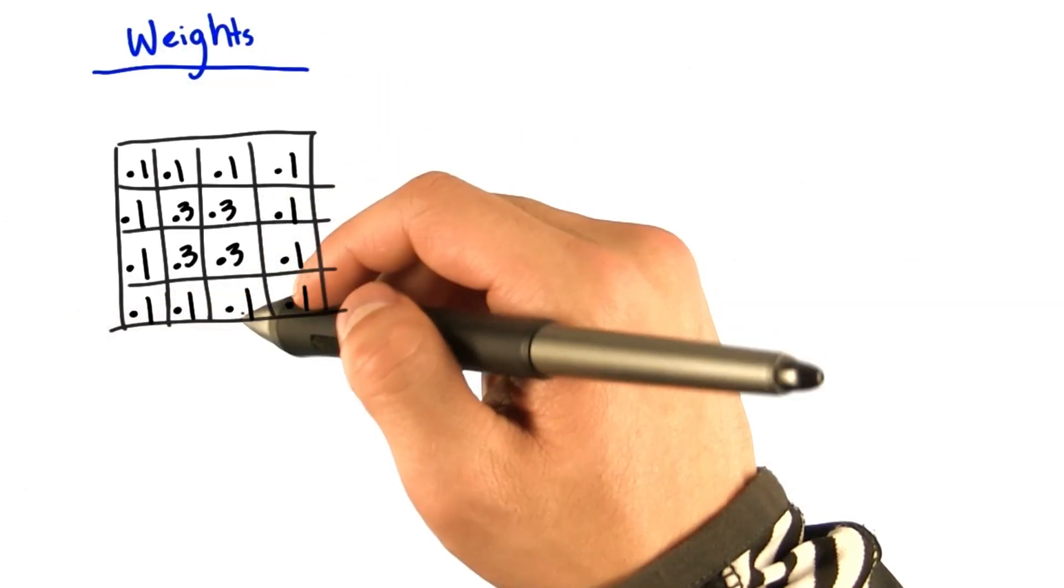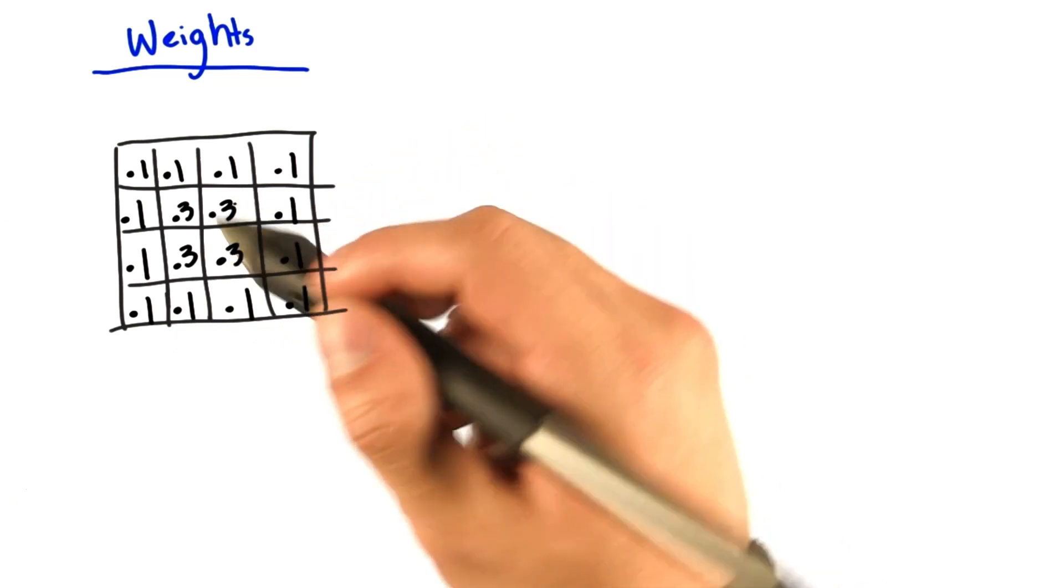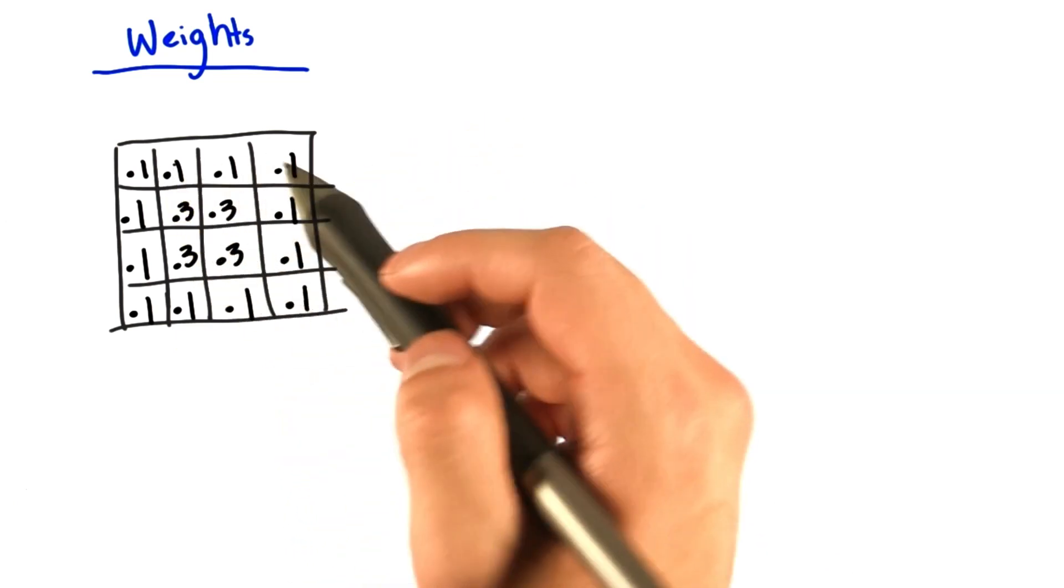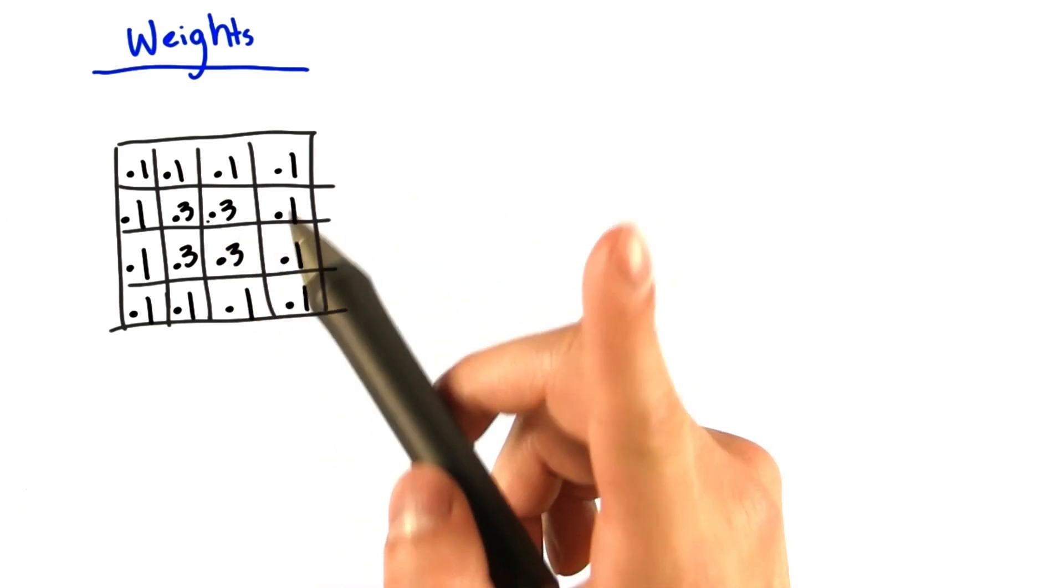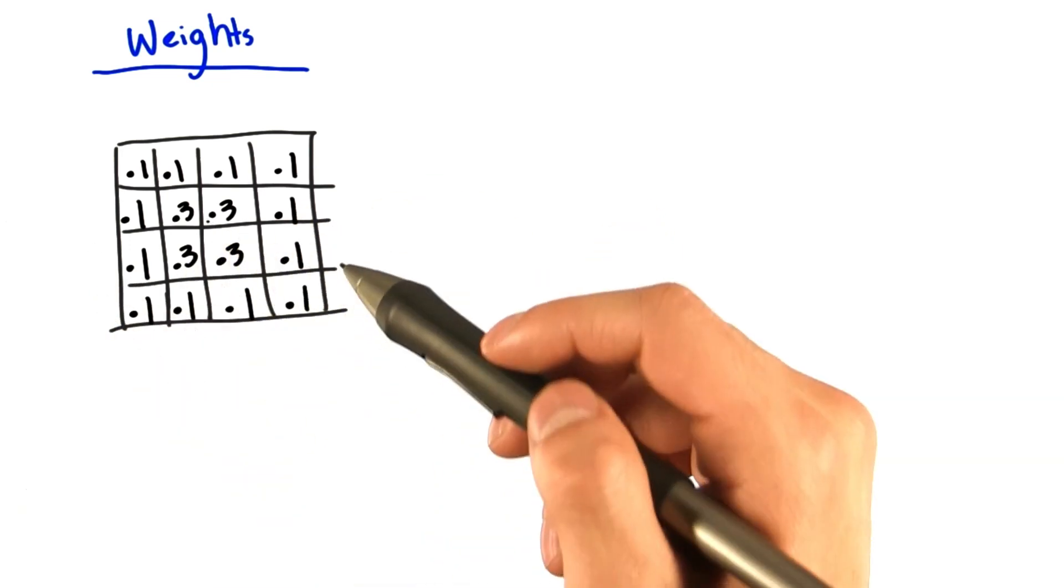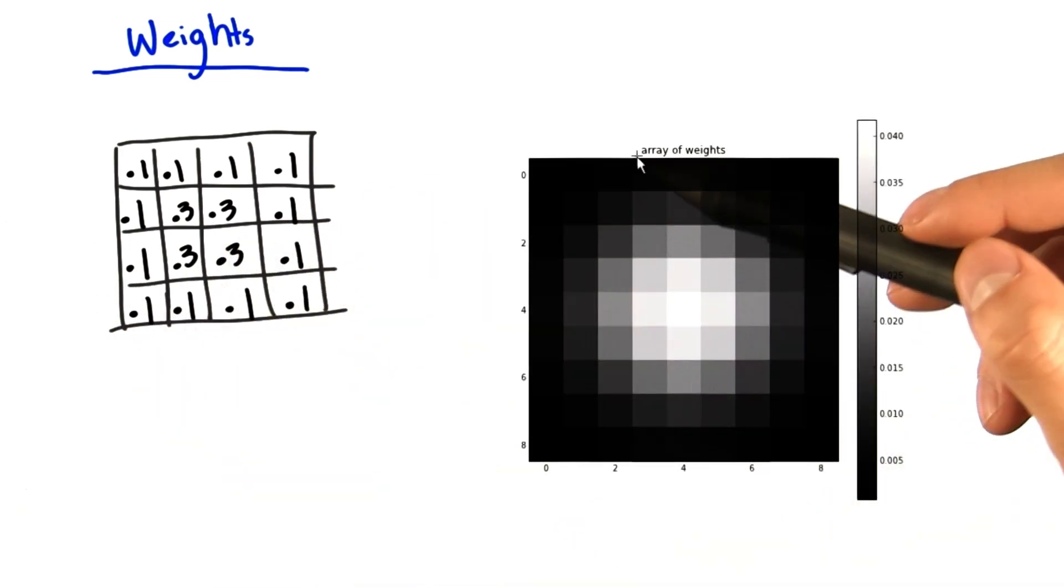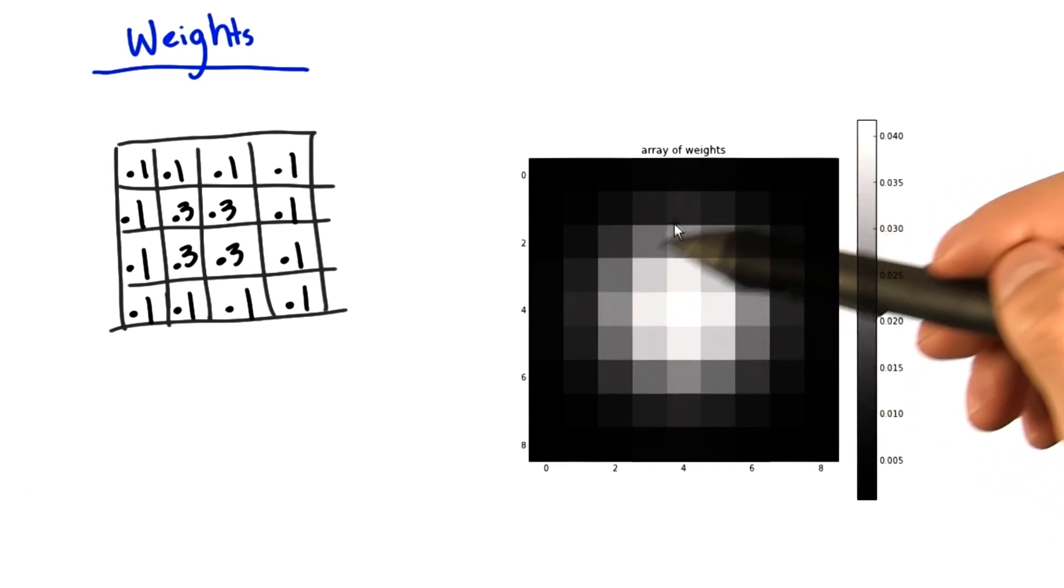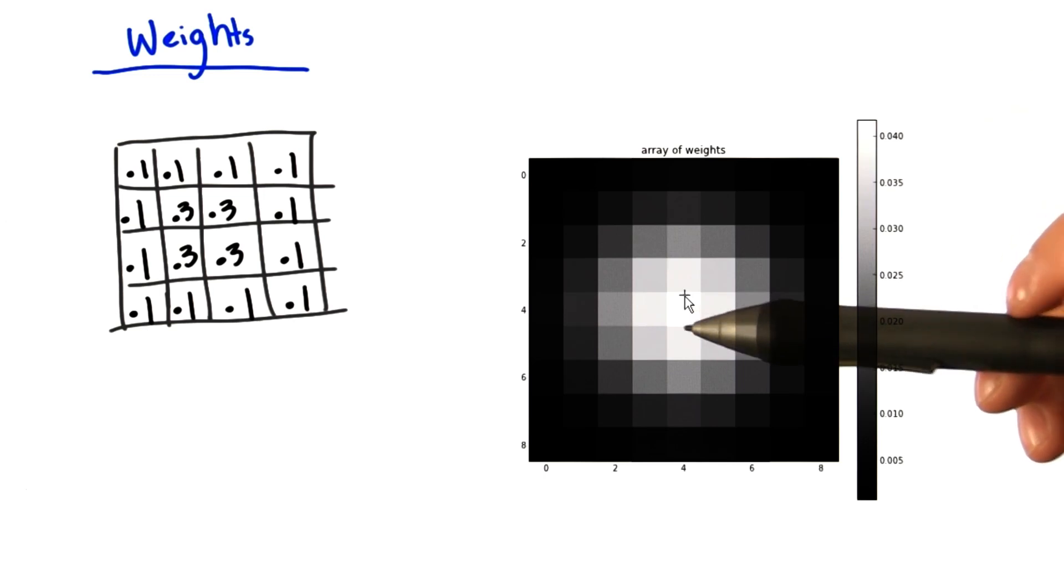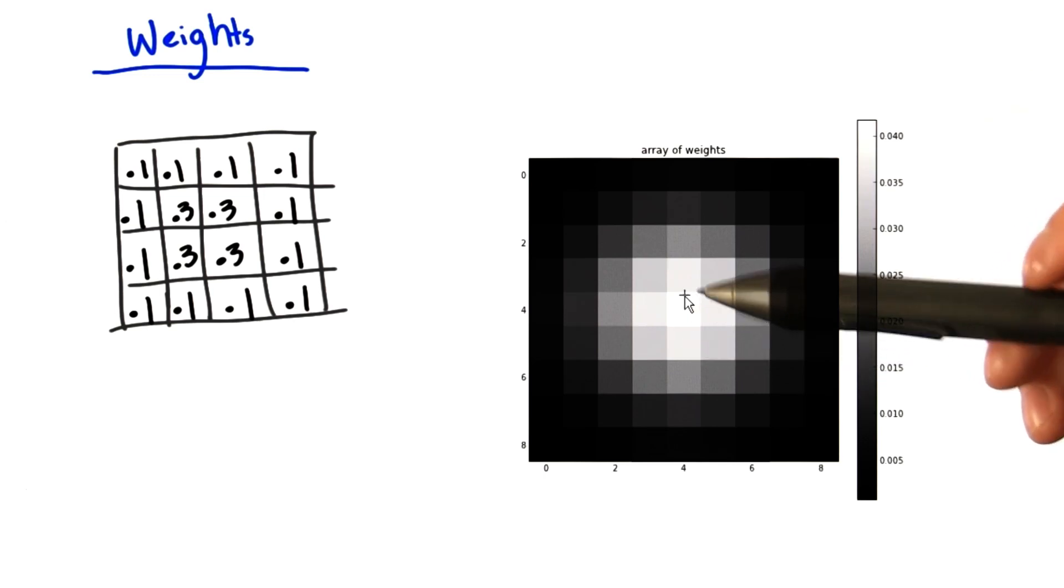So in this problem set, we will give you a small 2D array that contains weight values between 0 and 1 as follows. But this is just an example. The actual weight values that we will use will look like this. The smooth shape of the weights, as you can see here, will produce the nice looking blur effect that we saw earlier.